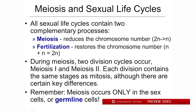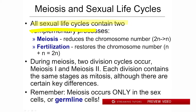All sexual life cycles — whether it's us, a plant, fungi, or whoever is sexually reproducing, and that includes a great number of organisms on this world — contain two processes, and those two processes are complementary, meaning you can't have one without the other.